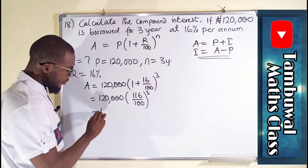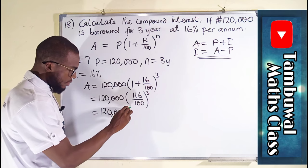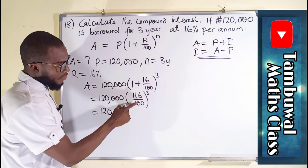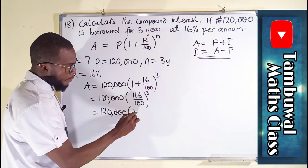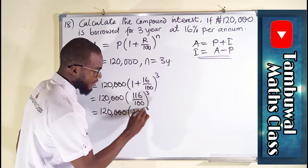This is equal to 120,000. If you simplify this, you're going to obtain 1.16, and this is to the power of 3.